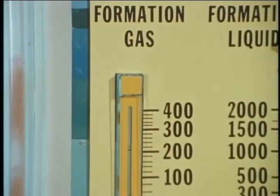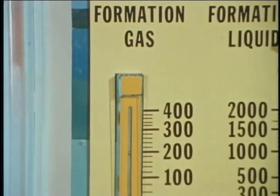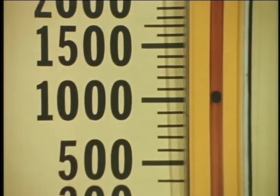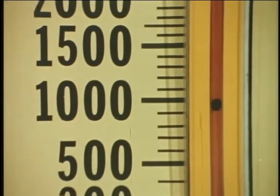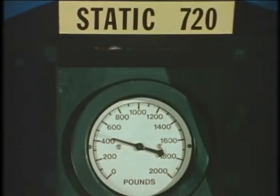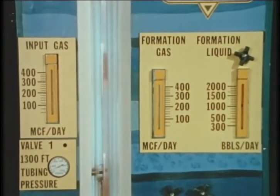We notice that the formation gas meter is now reading 200 mcf per day. Thus formation gas production has increased 50 mcf per day due to the lighter pressure gradient caused by the addition of the input gas. Checking the liquid meter, we see that the well is again producing 1,000 barrels per day, that the gas to liquid ratio is again 400 to 1, and that the flowing bottom hole pressure has returned to 470 psi. So input gas can be used to supplement formation gas to maintain full liquid production.